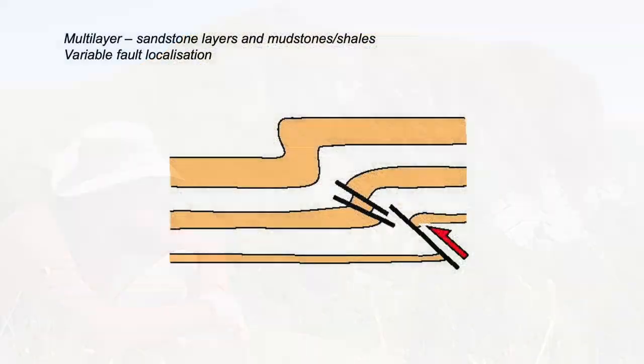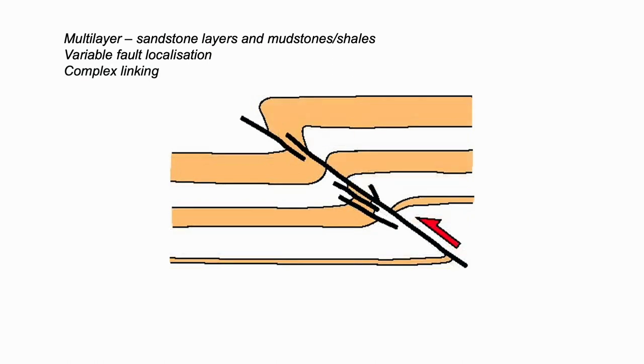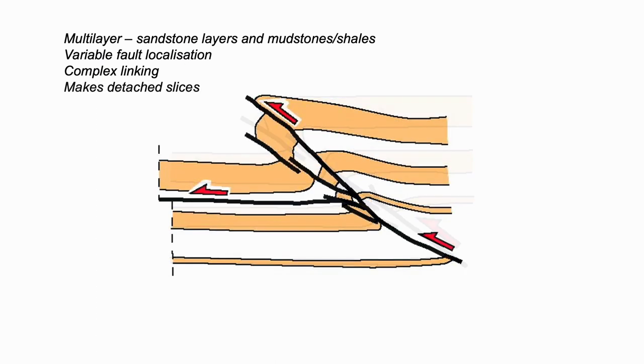This complexity in thrust zone architecture is a direct reflection of complex fault localization in a multi-layer where different competent sand units vary their localization behavior. With increasing strain and displacement, fault segments link up leading to arrays of sand slices. Sand is effectively entrained along the thrust zone.